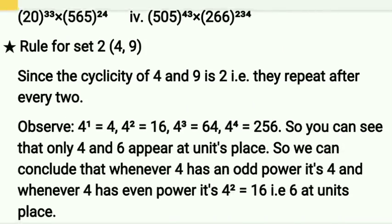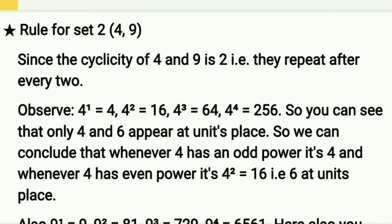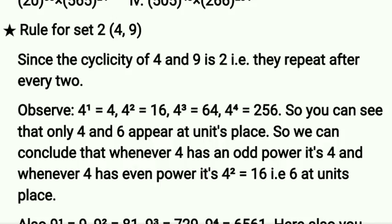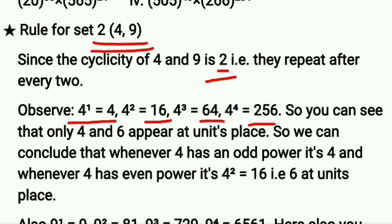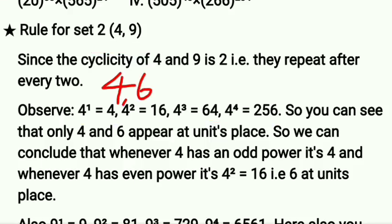Now have a look at Set 2. In Set 2 we have 2 digits: 4 and 9. The cyclicity of both 4 and 9 is 2. Here's why: 4^1 is 4, 4^2 is 16, 4^3 is 64, 4^4 is 256. The unit digits are 4, 6, 4, 6 — you will only get these 2 digits alternating.